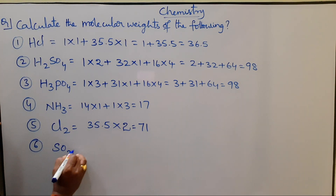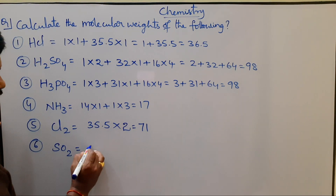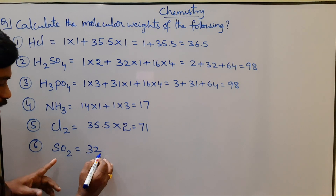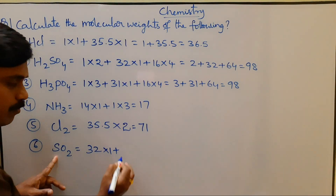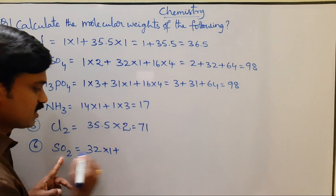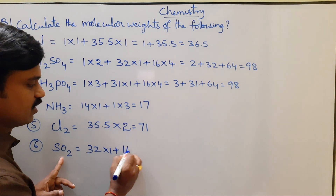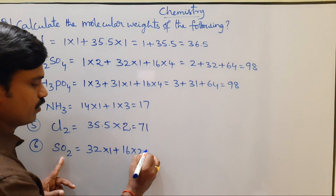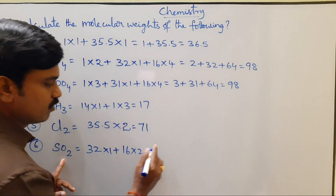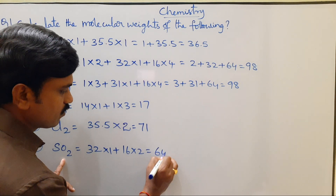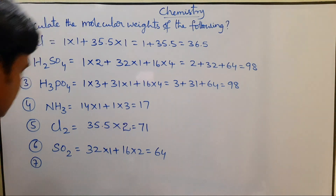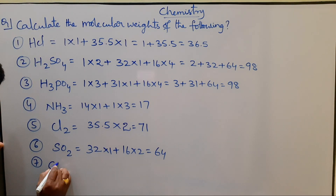Sulfur dioxide, SO2. Sulfur atomic weight 32 × 1, plus Oxygen atomic weight 16 × 2, equals 32 plus 32, which is 64.